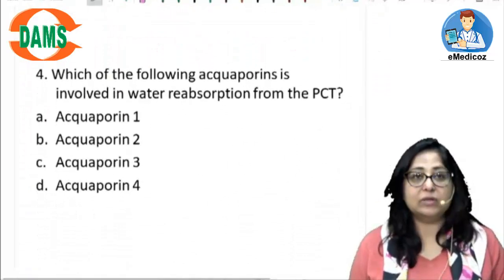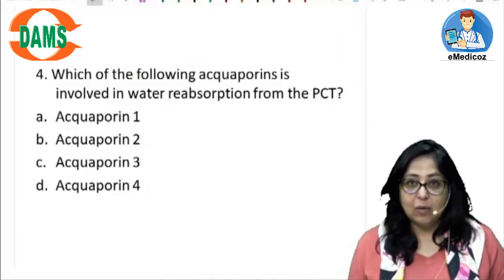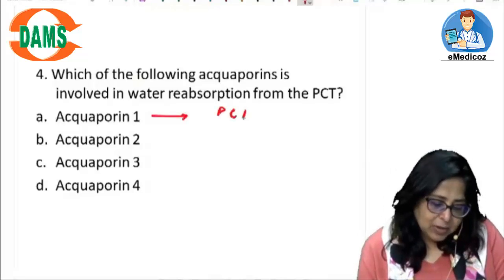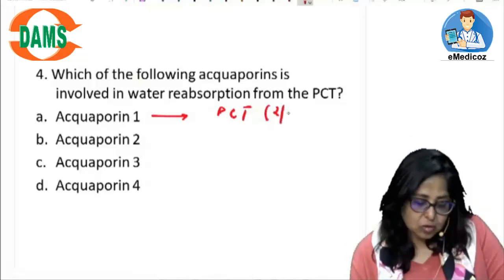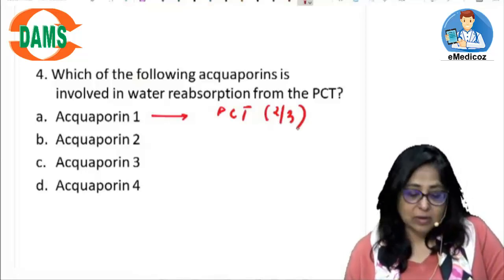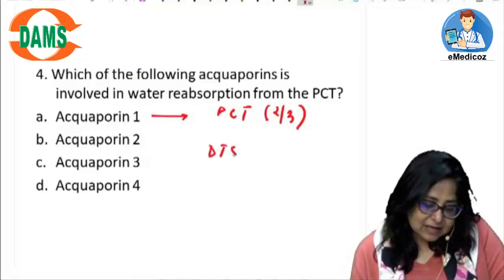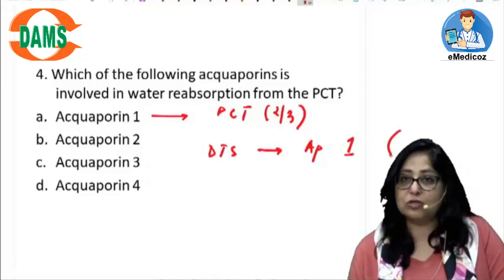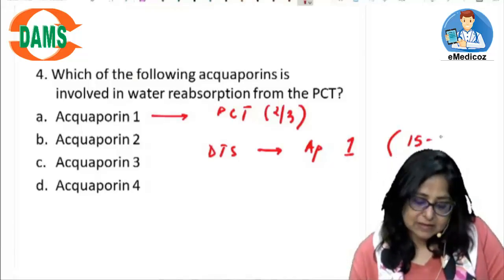The next question asks: which aquaporin is involved in water absorption from the PCT? Aquaporin 1 is present in the PCT, where maximum water absorption takes place — two thirds of water is absorbed in the PCT with the help of aquaporin 1. The descending thin segment also has aquaporin 1, where about 15 to 20% of water absorption takes place.